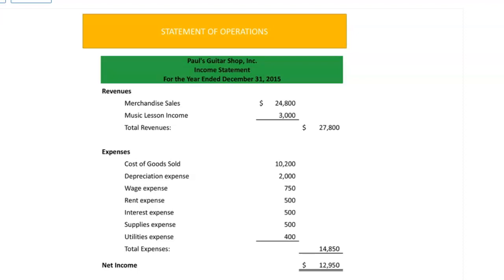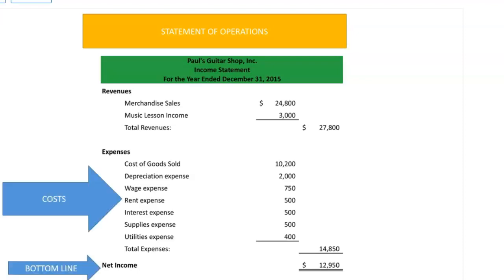Management accounting is about the income statement. For example, we have the income statement of Paul's Guitar Company for the year ending December 31st, 2015 — think of this as a statement of operations. In financial accounting you use the term 'expense,' but the language changes in management accounting: we don't refer to expenses as much anymore — we call them costs and look at how those costs affect the bottom line.